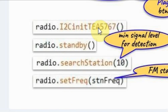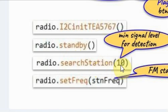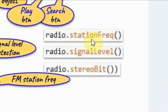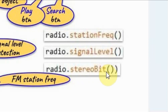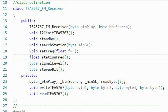The library has seven public functions. This function will initialize the I2C of the microcontroller so that we can write and read from the TEA5767. This function will put the FM receiver in standby mode and the audio is muted. This function will search for stations and store them in EEPROM, and the argument is the minimum signal level for detection. This function will play the FM station based on the FM station frequency in the argument. This function will return the frequency of the playing station in megahertz. This function will return the signal level as a percentage, and finally this function will return the stereo bit.